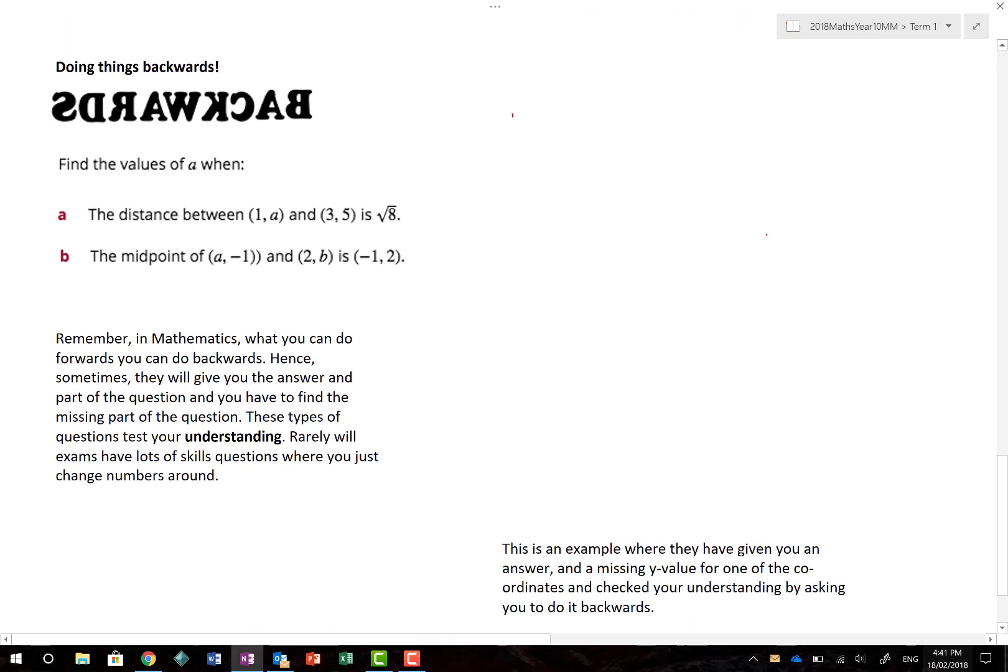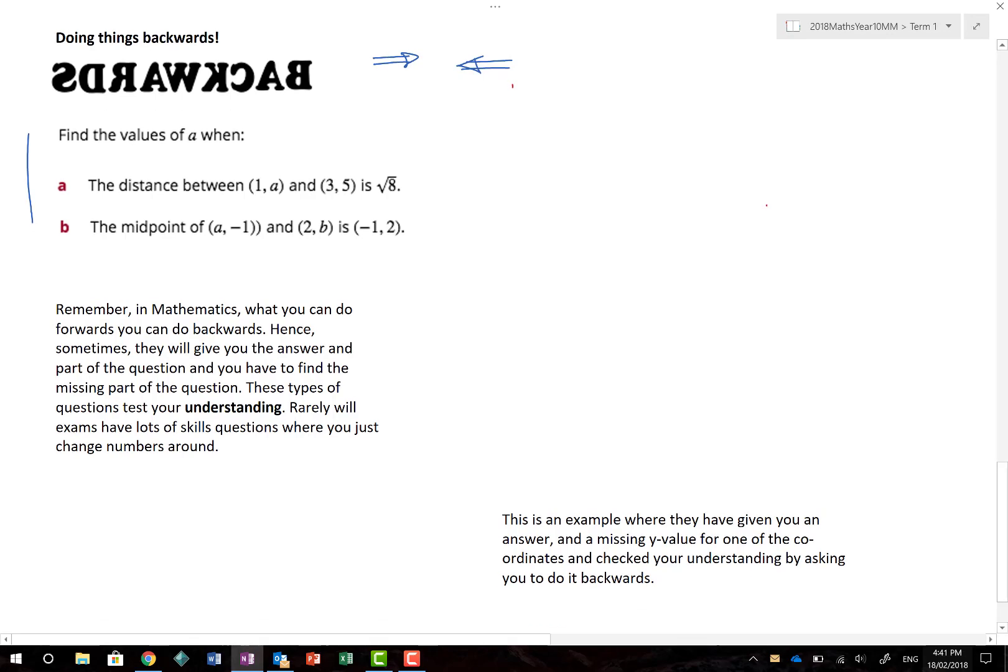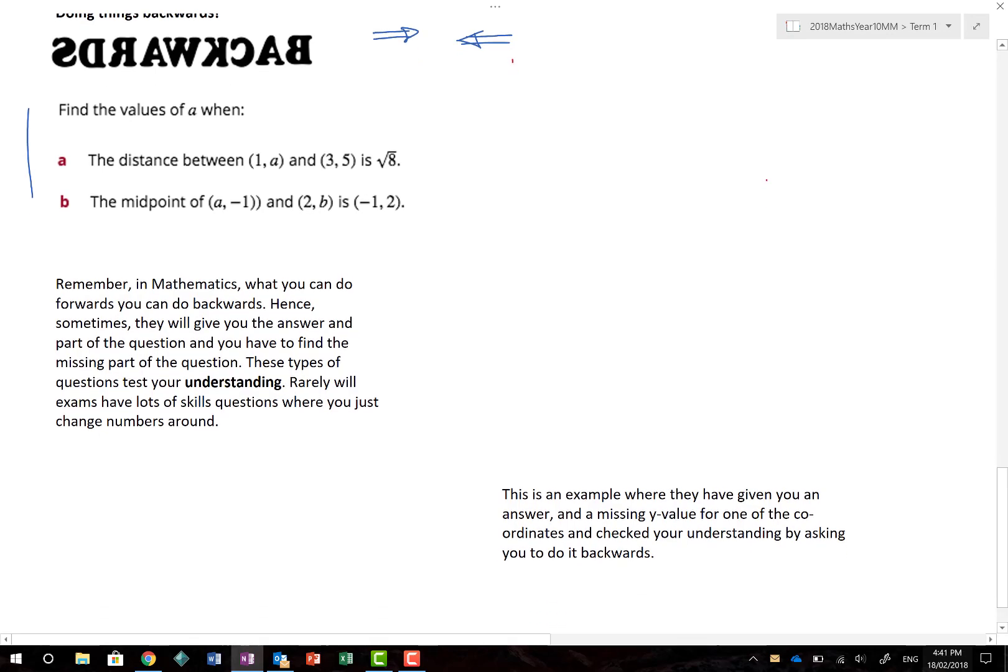Now, remember, with maths, what we can do forwards, we can always do backwards. And again, I have borrowed this question from the Cambridge Essentials series just to highlight the case. And no infringement of copyright was actually planned. So, find the values of A when the distance between 1 comma A and 3 comma 5 is root 8. Whoa! Mind blown! What's this A business? Well, in this situation, they're actually giving you the answer and trying to work backwards to get to the question.